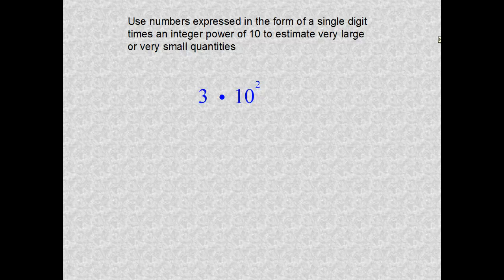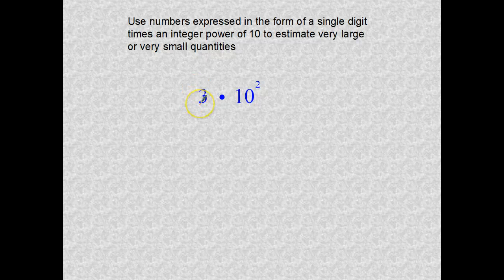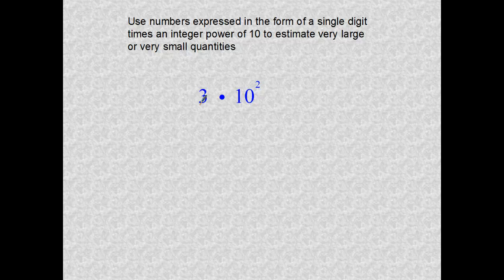The standard says to use numbers expressed in the form of a single digit — like the 3 here, which is a single digit — times an integer power of 10, currently to the second power, and estimate these as very large or very small quantities. A very large number is one or greater, and a very small number is between zero and one — those are decimal numbers. The coefficient is the number in front of the base 10.